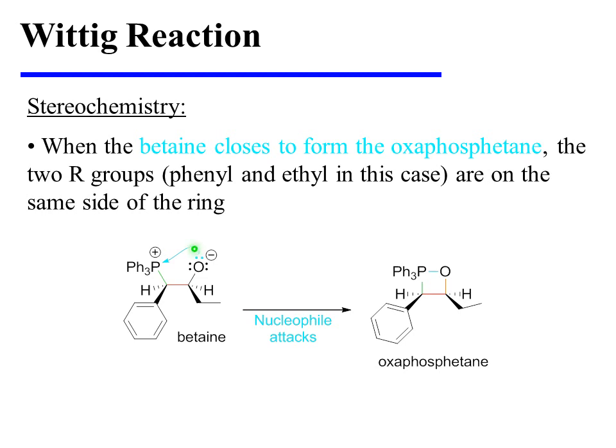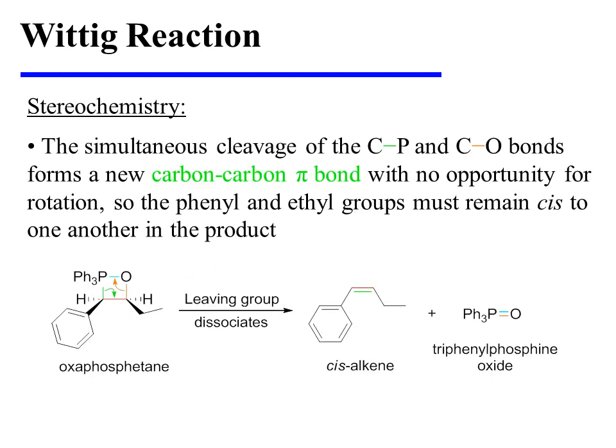Notice that when the betaine closes to form the oxaphosphatane, the two R groups — in this case phenyl and ethyl — are on the same side of the ring. Simultaneous cleavage of the carbon-phosphorus and carbon-oxygen bonds forms the new carbon-carbon pi bond. Since this happens in a concerted fashion, there is no opportunity for rotation, so the phenyl and the ethyl groups must remain cis to one another in the final product.